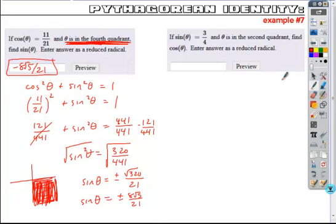So instead of writing cosine squared plus sine squared equals 1, I'm going to write cosine squared is equal to 1 minus sine squared. And then I'm going to plug in what I know.